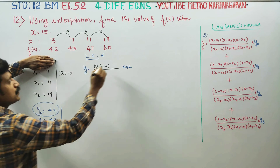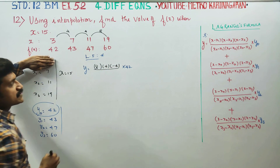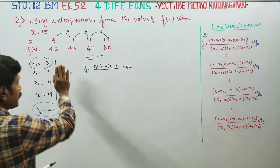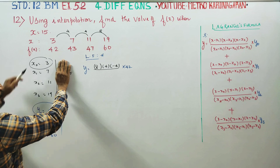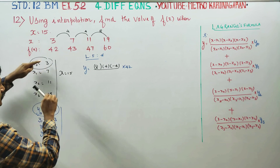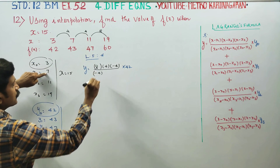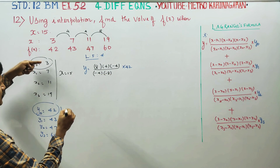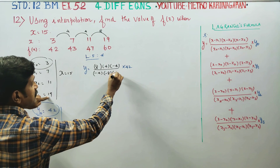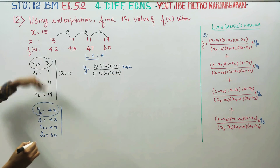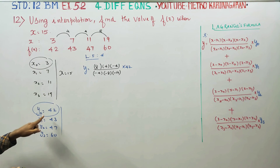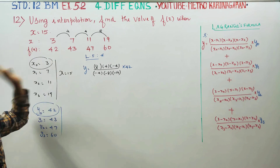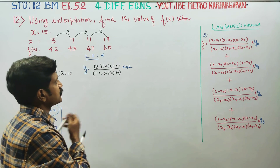For the denominator of the y0 term: 3 minus 7 gives minus 4, 3 minus 11 gives minus 8, 3 minus 19 gives minus 16. So x0 equals 3, and y0 equals the denominator value. The first term gives plus 1.